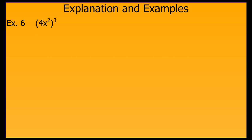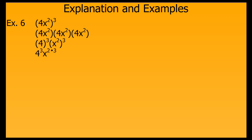This example throws another wrinkle at us, as we have a product, four times x to the second power, within the quantity that's being raised to the power. I can expand this out to get four x to the second, times four x to the second, times four x to the second — three of them. I then notice that I have four to the third and x squared to the third, which I can write out and simplify to 64 x to the sixth. 64 comes from calculating four to the third power, and x to the sixth from using my power of a power property.